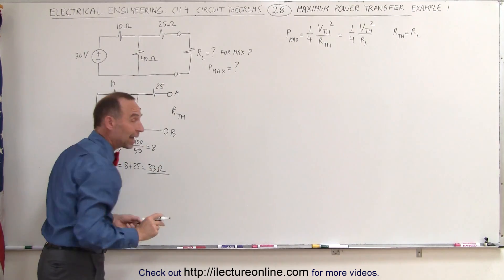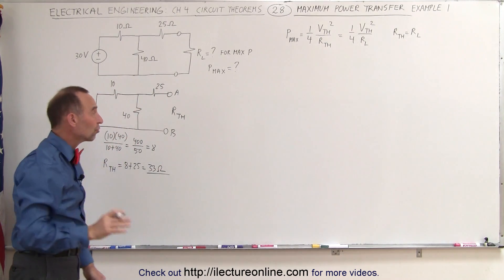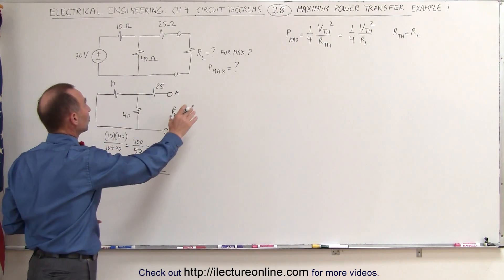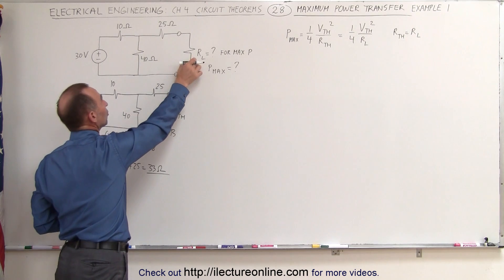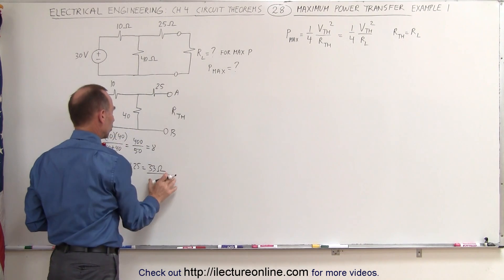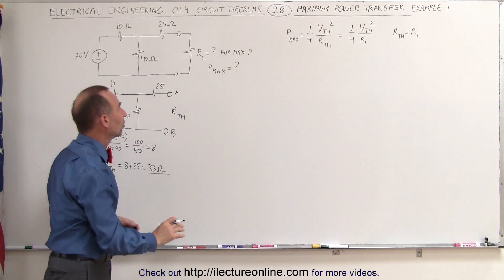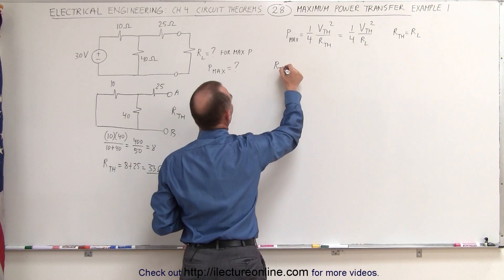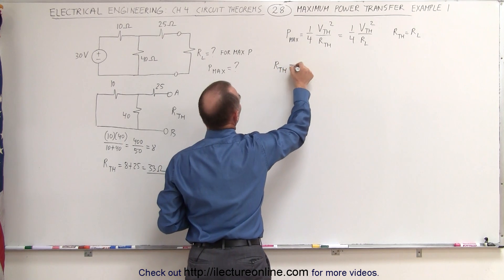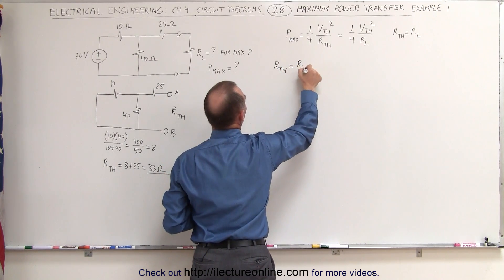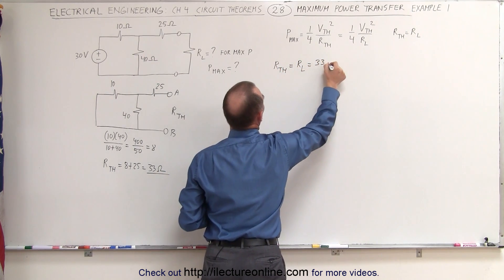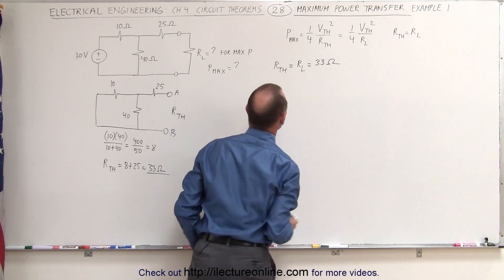To find the maximum power transferred in this particular circuit, we need to make the load resistor equal to 33 ohms. So R-Thevenin, which equals R-sub-L, is equal to 33 ohms.